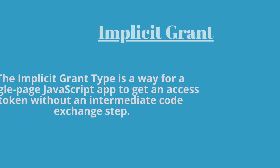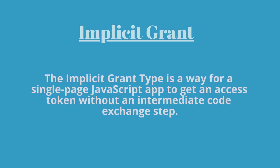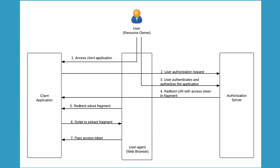Now let's move forward to the Implicit Grant type. The Implicit Grant type is a way for a single-page JavaScript app to get an access token without an intermediate code exchange step. The user will access the client application, which will ask for user authorization from the authorization server. If the user authenticates and authorizes the application, the authorization server will send the access token directly to the client application.